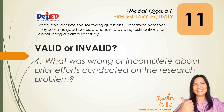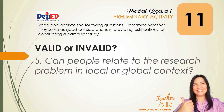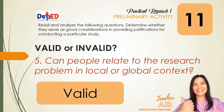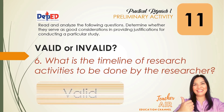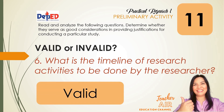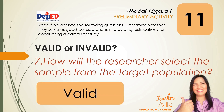Number four: What was wrong or incomplete about prior efforts conducted on the research problem? The answer is invalid. Number five: Can people relate to the research problem in local or global context? The answer is valid. Number six: What is the timeline of research activities to be done by the researcher? The answer is valid. Number seven: How will the researcher select the sample from the target population? The answer is valid.